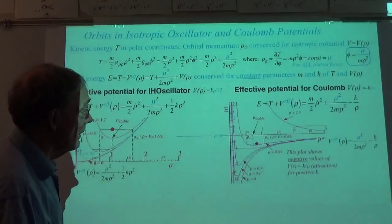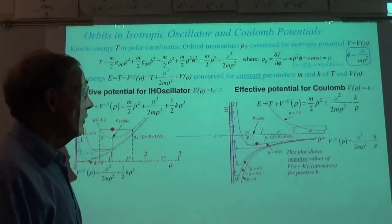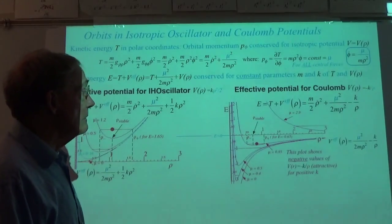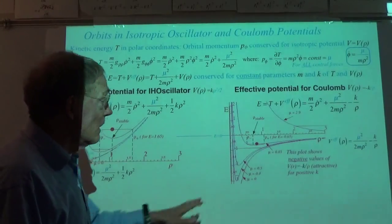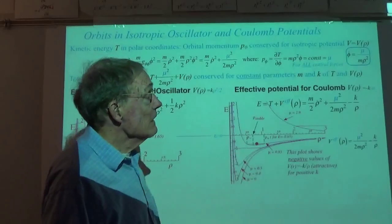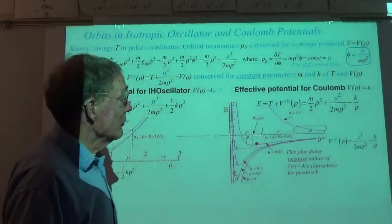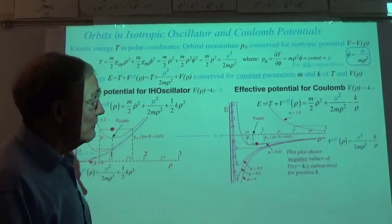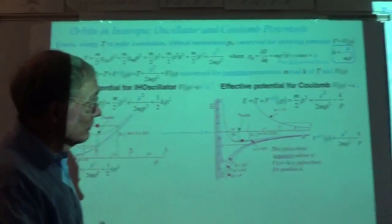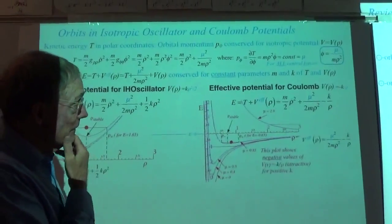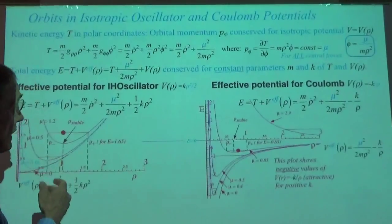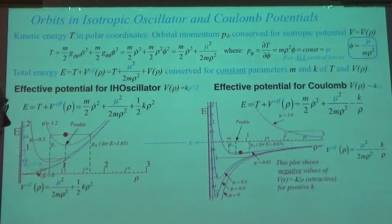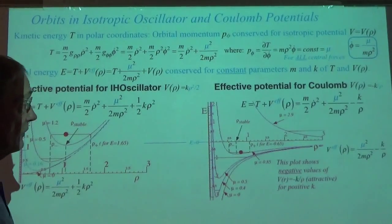The one we'll look at most will be the one that has bound orbits. Just to make sure you remember what we're talking about: the plot of the effective potential depends on the choice of constants, particularly K, and whatever orbital momentum you're going to have.